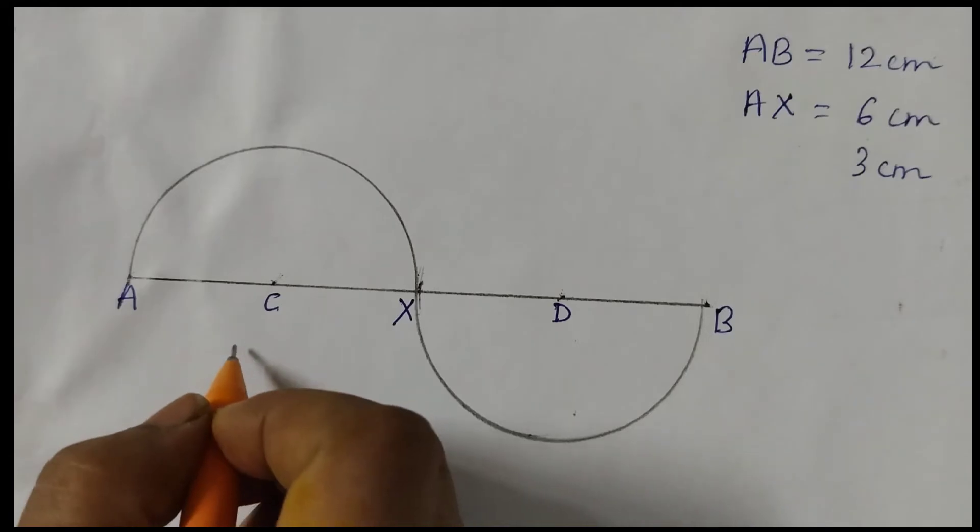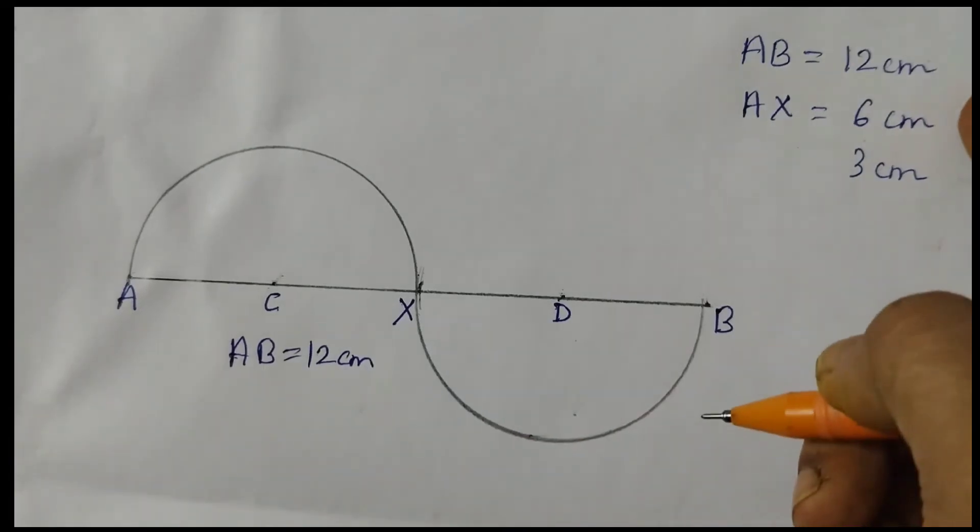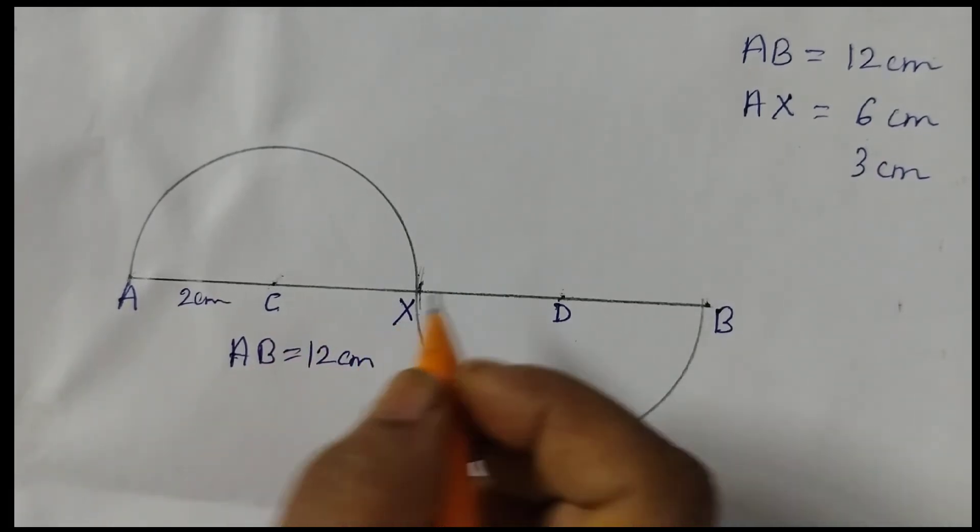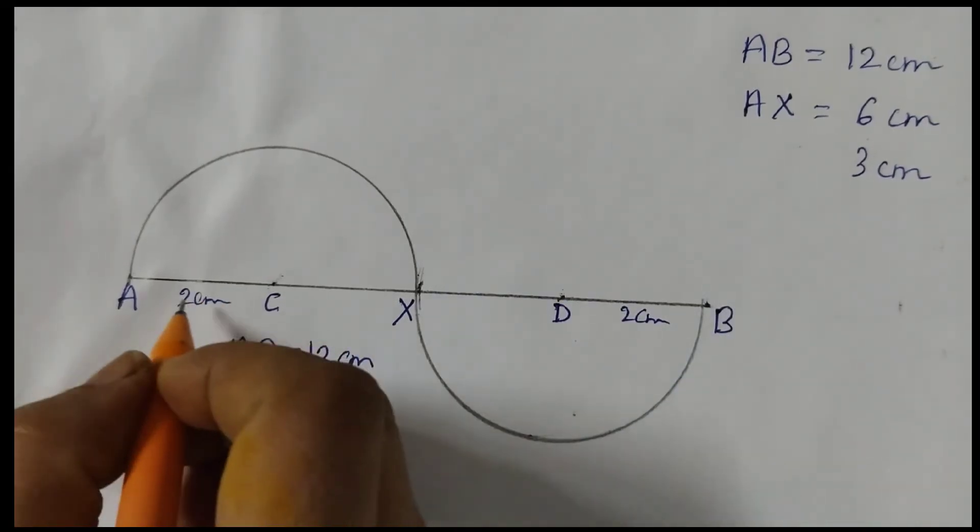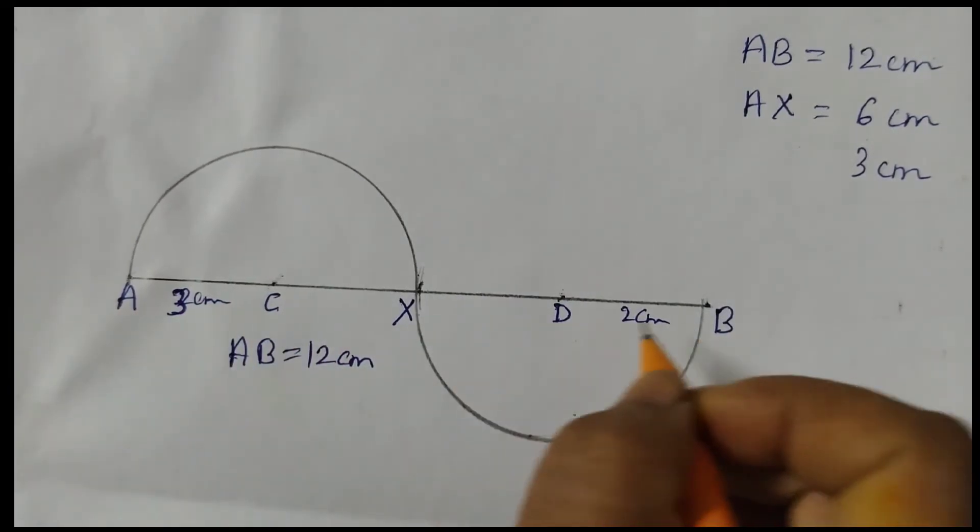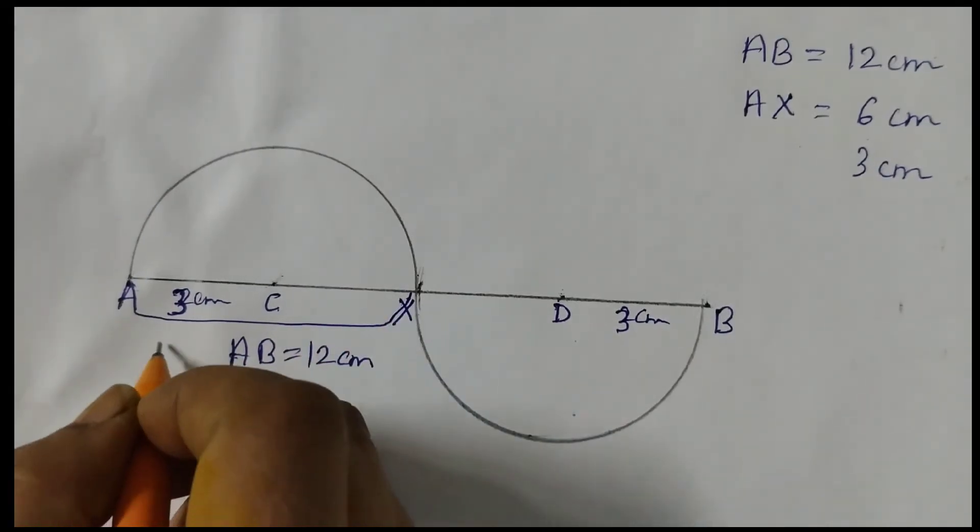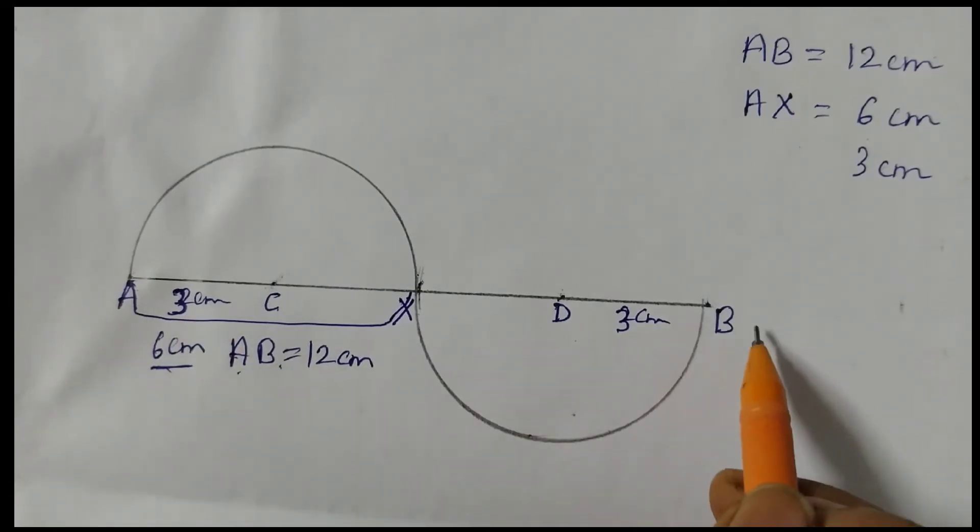And if you want the measurements of AB, 12 centimeter. I have already written there. See? AB 12 centimeter. And AC, this is 2 centimeters. CX is also 2 centimeters. This is also 2. These are all 2 centimeters, that is the radius. Sorry, it's all 3 centimeters. 2 was for the previous one. This is 3 centimeters. This is 3 centimeters, because half of 6. This AX, the whole thing from here till here is 6 centimeters. So 3 from A to C, A to X is 6, and A to B is 12 centimeter. I hope it is now clear to you.